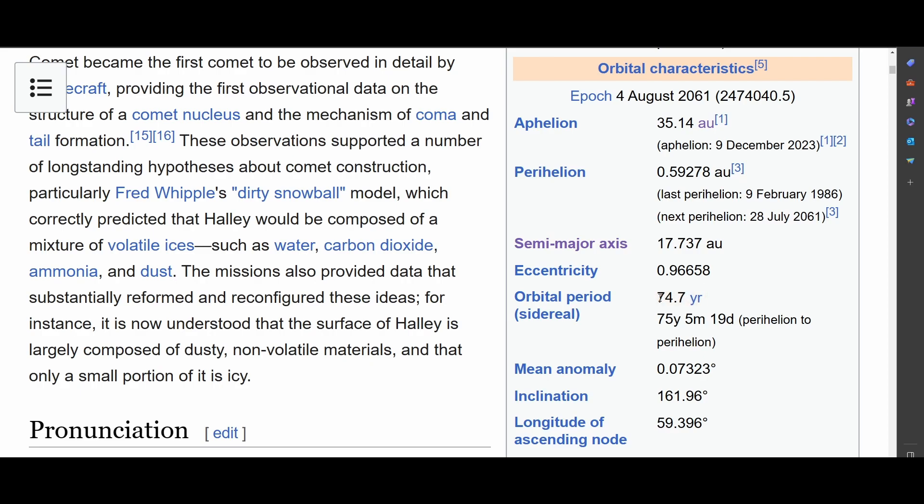So this comet comes close to us every 75 years almost. That's a long period. The last close approach was 1986. That's why I said your parents might know this. And the next one is predicted to be 2061. How old am I by then? 70 or something. Yeah, a little old. I can watch that. So why am I talking about Halley's Comet? Just because I would need an extreme orbit for a better visualization and giving you a better understanding.